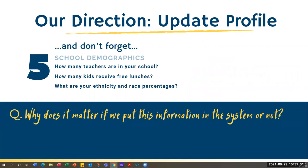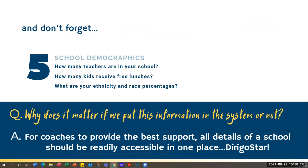It's also important to have data in the system, like demographics — how many teachers are in your school, how many kids receive free lunches, what are the ethnicity and race percentages. We get the question a lot that this information is somewhere else. We're not asking for a whole lot, just a few demographic pieces of information. We don't use this information, but it is important when coaches go in to be able to provide the best support — they really need to have the picture of your school, especially if they're a new coach. It probably won't take more than five minutes to enter it.